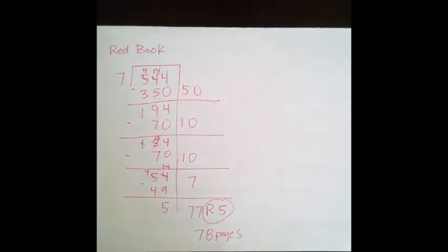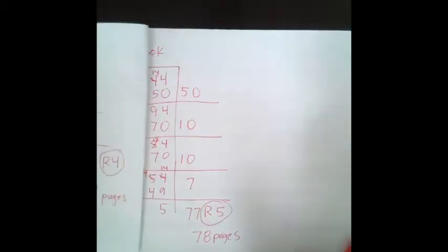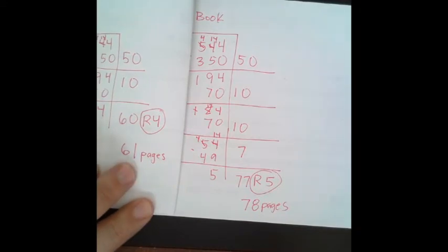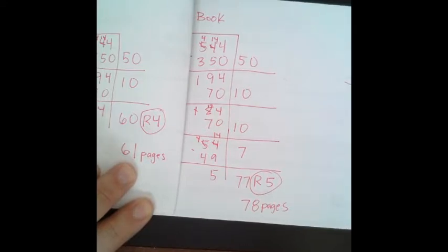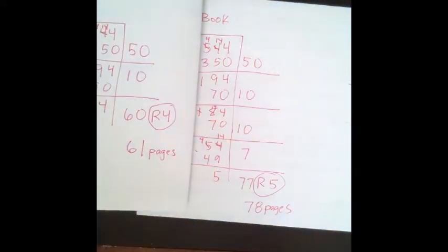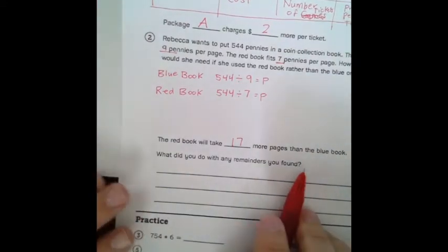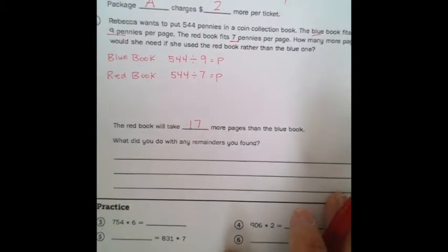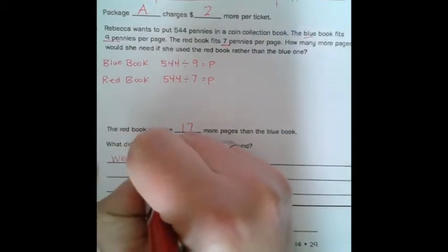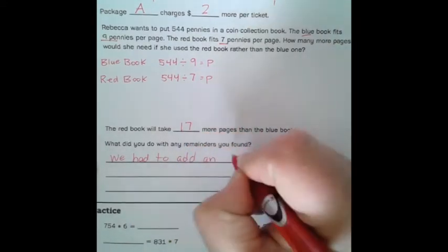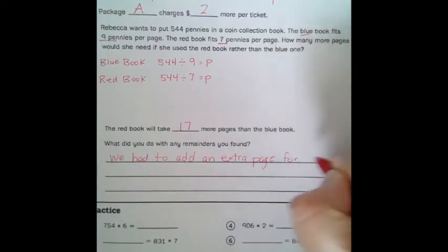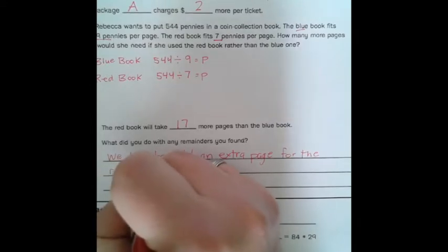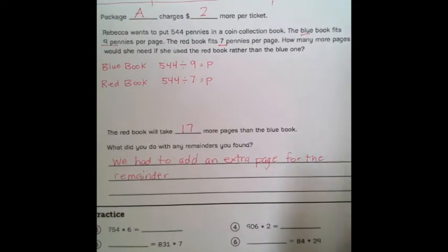So if we look back in our blue book, our blue book, we had 61 pages. In our red book, we had 78 pages. So how many more pages was our question? So 78 take away 61. 8 take away 1 is 7. 7 take away 6 is 1. So it's 17 more pages. Let's go ahead and put that on here. So the red book will take 17 more pages than the blue book. Next question. What did you do with any remainders that you found? Well, we needed to add another page for each remainder. To add an extra page for the remainder. Because we needed to put those remaining pennies somewhere.